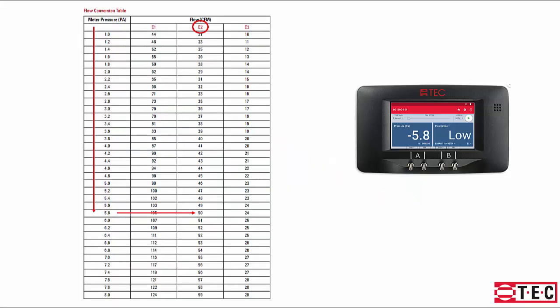Then you'll use the chart. You'll look at what your reading was, follow down the pressure column, and then across to, in this case, E2. So a pressure of 5.8 is equivalent to 50 CFM.